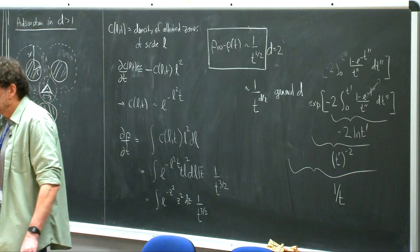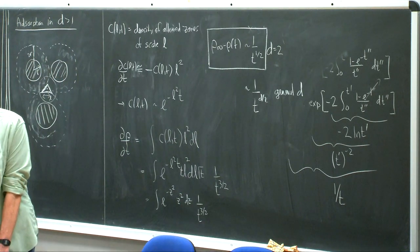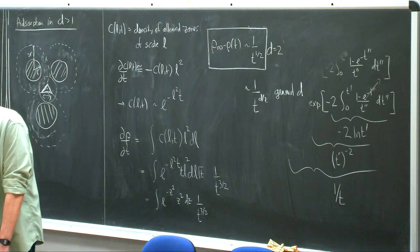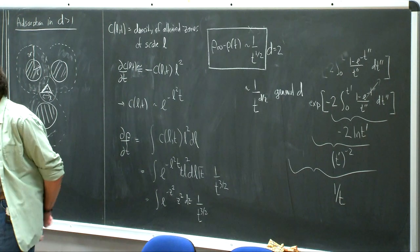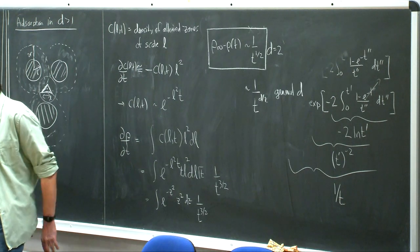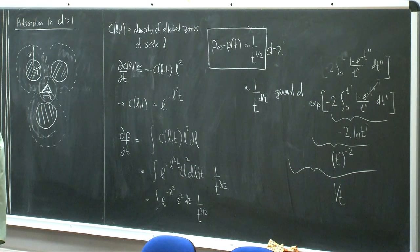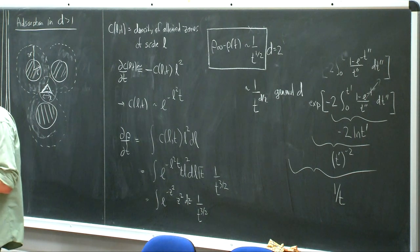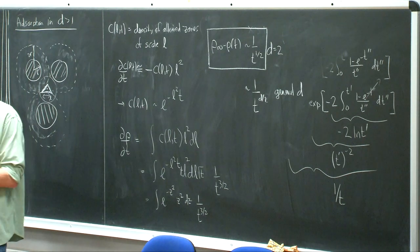This is the main result for irreversible adsorption of isotropic objects in higher dimensions. People have played lots of additional games: anisotropic objects, objects that can move, objects with different shapes — but this power-law result t^(-D/2) is the main one.